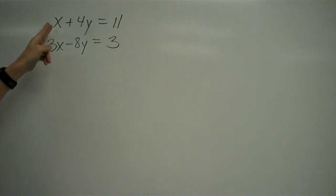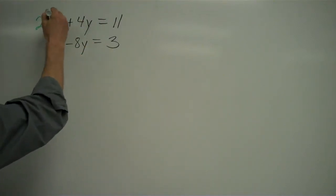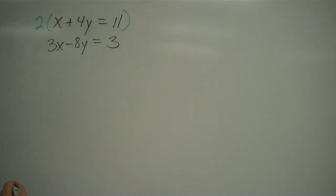It cancels out, which is why we call it elimination. One of the unknowns gets eliminated. Let me tell you what I mean here. I'm going to take the top equation and I'm going to multiply this top equation by 2. Now you might be wondering why 2.